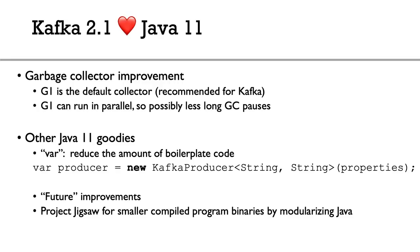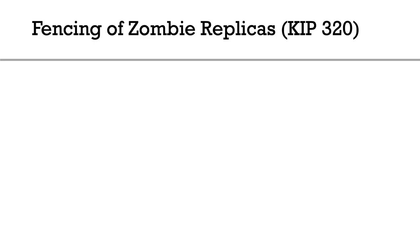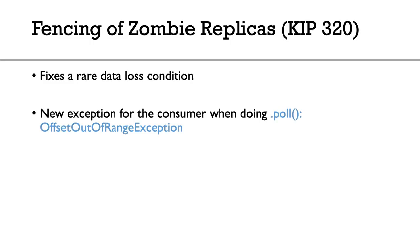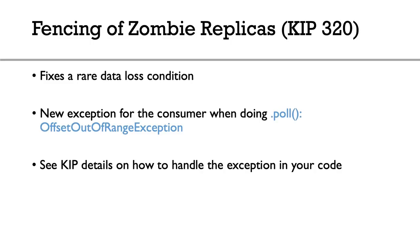Another big internal change is the fencing of zombie replicas. This was a rare data loss condition, but it could happen. With KIP-320 it is completely gone. Consumers doing a poll to get data from Kafka can now receive an offset out-of-range exception. See the KIP details to understand how to deal with those exceptions.